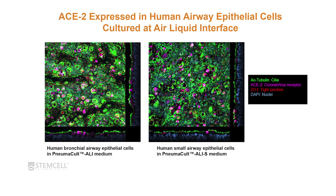Likewise, we have shown that both small and large airway epithelial cells — grown in PneumaCult ALI media or PneumaCult ALI-S media for small airway — also express ACE2, which is the other major receptor for coronaviruses. As you can see in pink, there is a strong expression of ACE2 at the apical side of these epithelial cells. In red are the tight junctions, and green is tubulin representing the cilia.